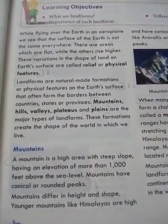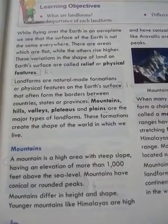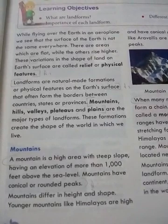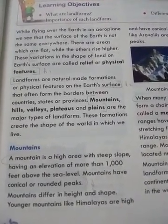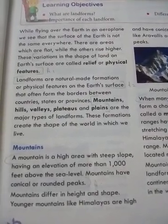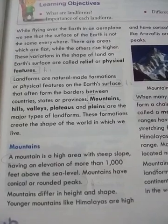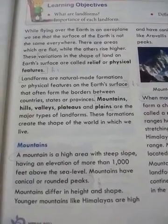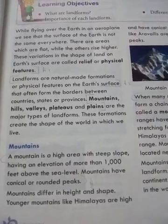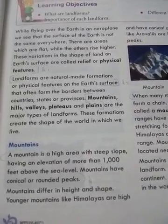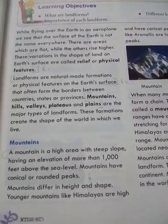Landforms are naturally made formations or physical features on the earth's surface that often form borders between countries, states and provinces. Mountains, hills, valleys, plateaus and plains are the major types of landforms. These formations create the shape of the world in which we live.